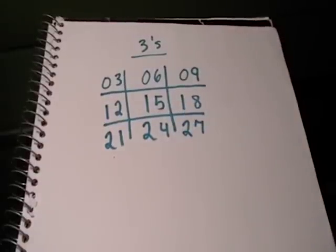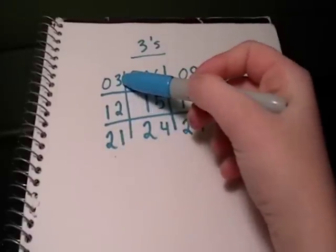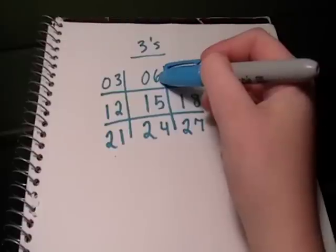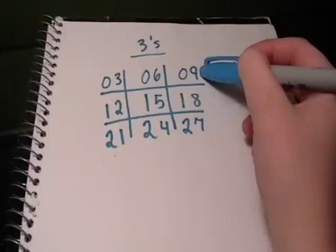Now all we have to do is read it like a book. 1 times 3 is 3, 2 times 3 is 6, 3 times 3 is 9.